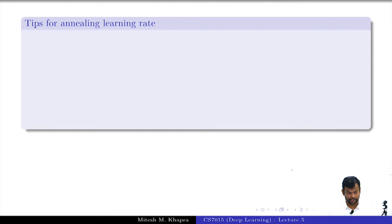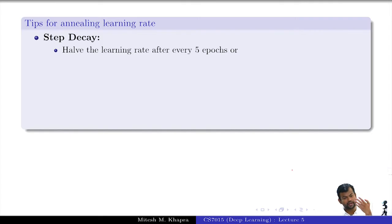Here are some tips for annealing the learning rate. There is something called step decay. What you can do is halve the learning rate after every phi epochs. What do you expect after phi epochs? That you have moved enough and you are closer somewhere to the solution. If you are closer to the solution, you want to move slow. Decrease the learning rate after every phi. This is again a hyperparameter. You could fix some number of epochs and after these epochs I will just halve the learning rate.